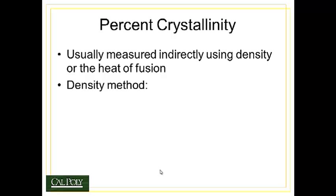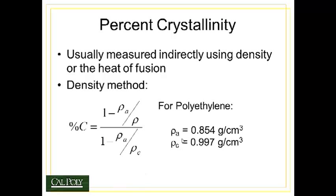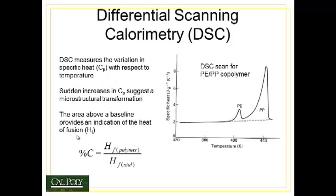Percent crystallinity can be measured by two different techniques: an indirect method called the density measurement method, and also by comparing the heat of fusion of the crystalline material to a sample. In the density method, the percent crystallinity equals 1 minus the density of an amorphous polymer divided by the density of the sample, all divided by 1 minus the density of the amorphous material divided by the density of the crystalline material. For example, the density of amorphous polyethylene is 0.854 g/cm³ and the density of the crystalline material is almost 1 g/cm³. You insert the density of your sample and calculate the percent crystallinity.